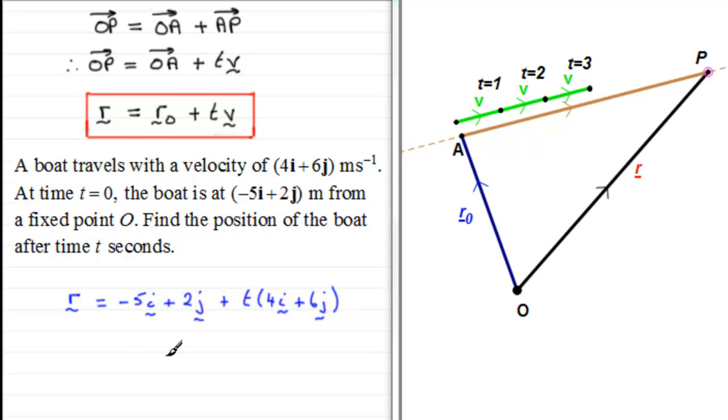But what I would encourage you to do is generally group up the i components and the j components. So if I took the i component starting with this positive value here, we've got 4t and then minus 5 in the i direction, followed by, and if we start with the positive term here for j, 6t, we've got 6t and then plus 2 in the j direction.